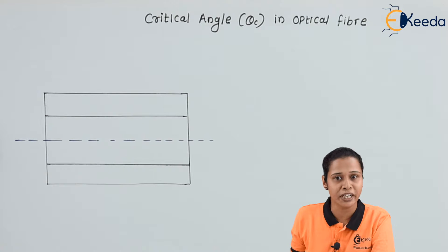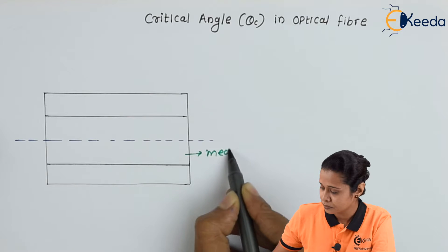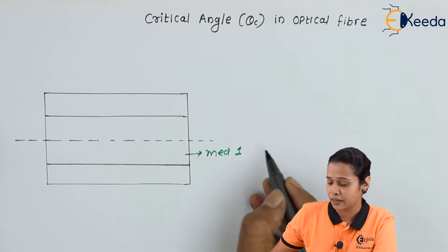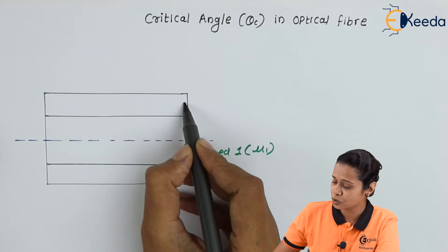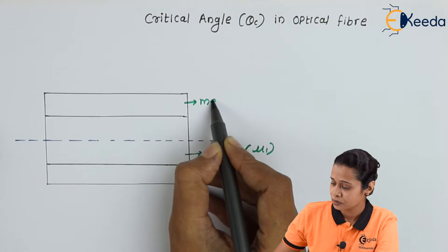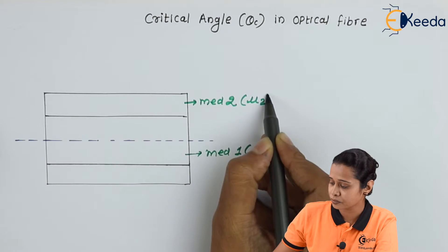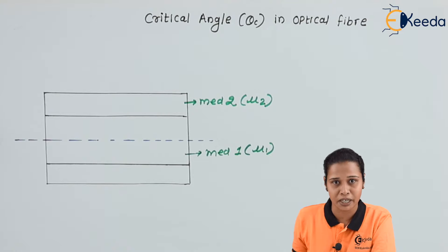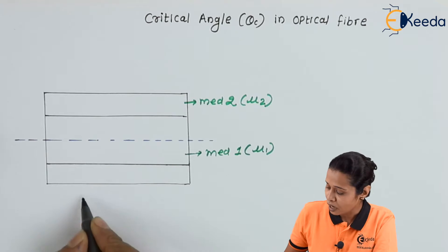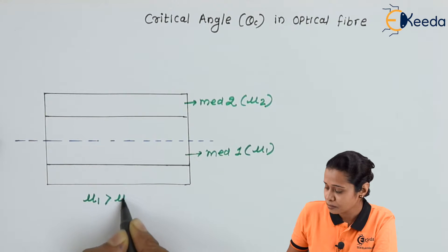Let us consider two mediums: medium one of refractive index μ₁ and medium two of refractive index μ₂. We know the ray of light should travel from denser to rarer medium, which means we have refractive index μ₁ greater than μ₂.